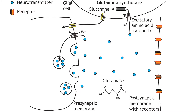Glutamate action is terminated by two mechanisms. Reuptake of glutamate molecules into the presynaptic terminal can occur, or glutamate can be transported into nearby glial cells. The excitatory amino acid transporters are sodium co-transporters and use the sodium electrochemical gradient to drive neurotransmitter transport.